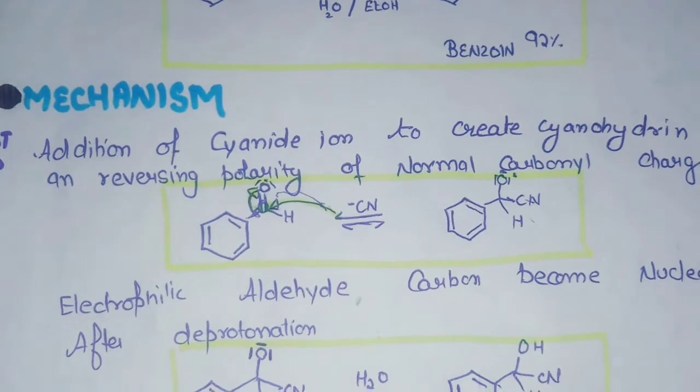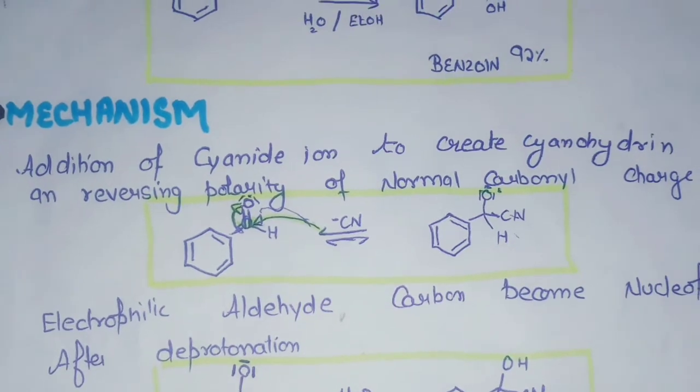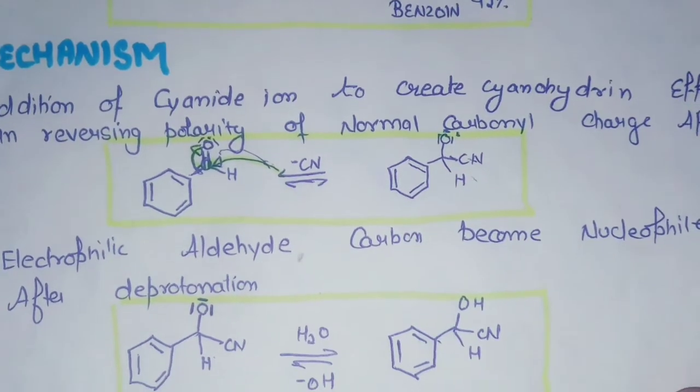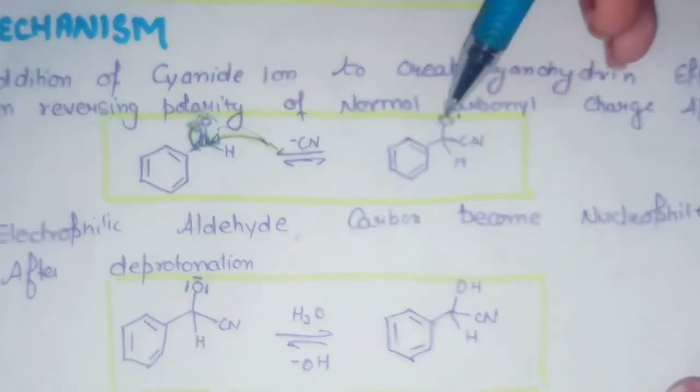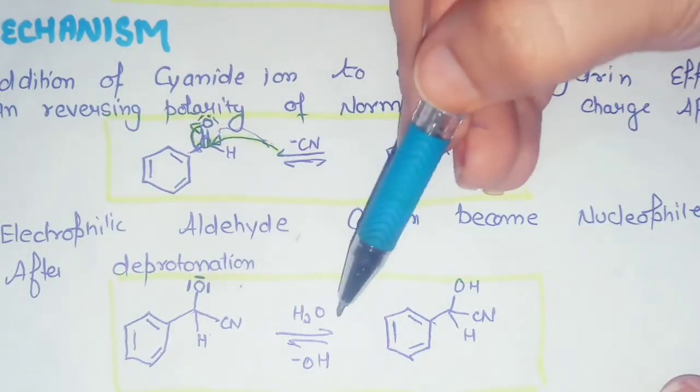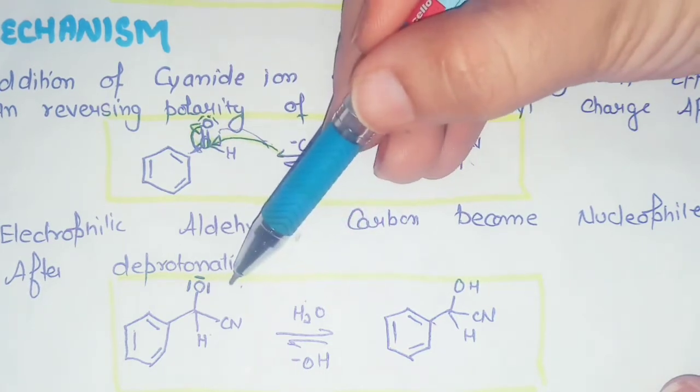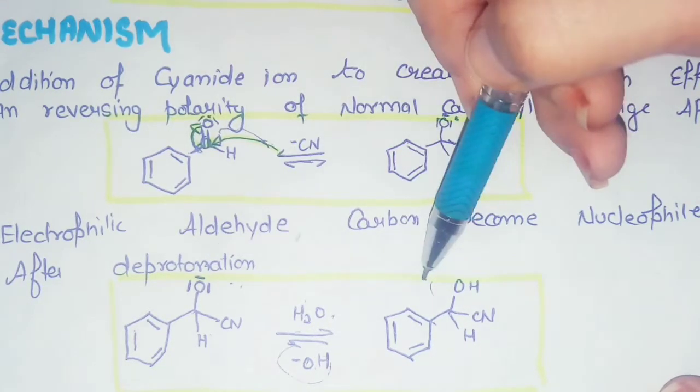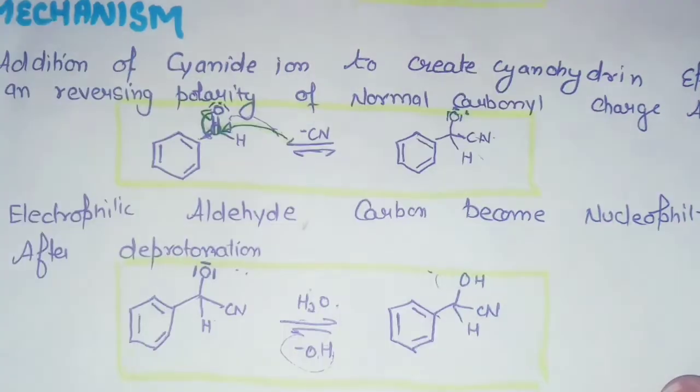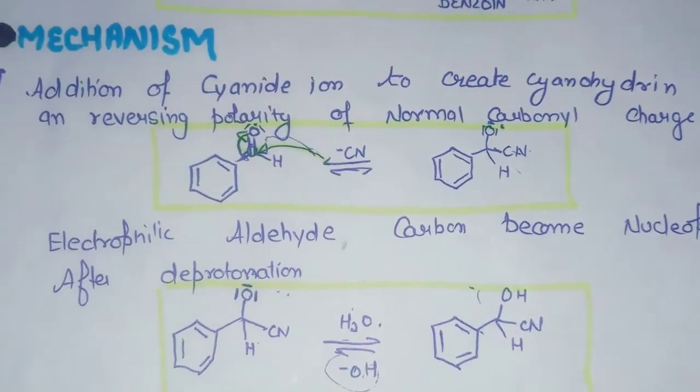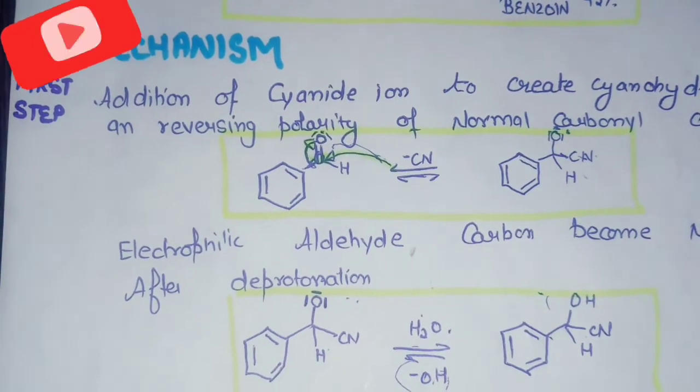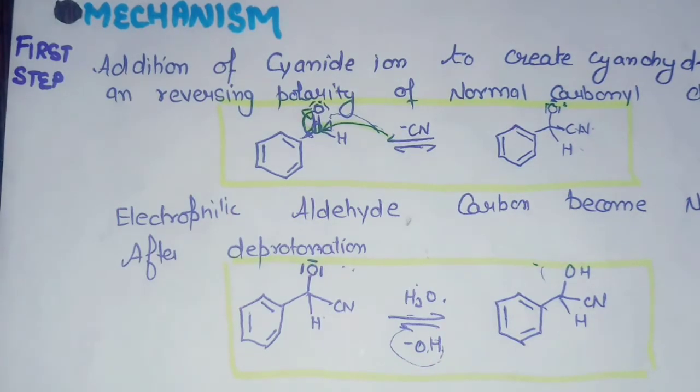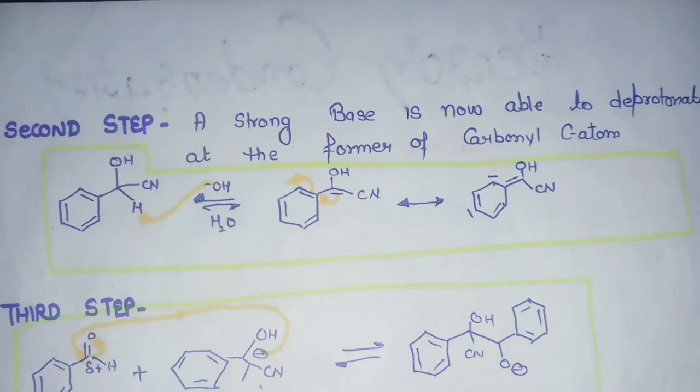When we use the electrophilic aldehyde carbon, we do deprotonation when we remove hydrogen from the hydroxyl group. We remove the bond so that it will act like a nucleophile. Water is added, and when removed, OH is left behind, which is the second step.